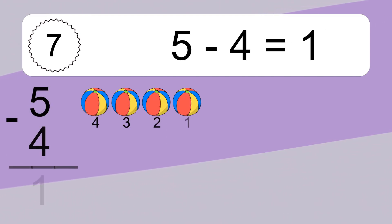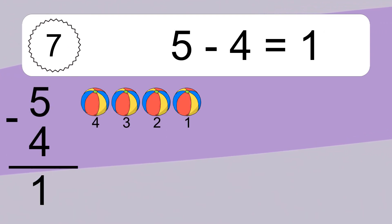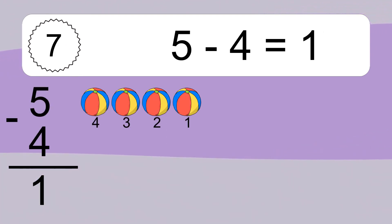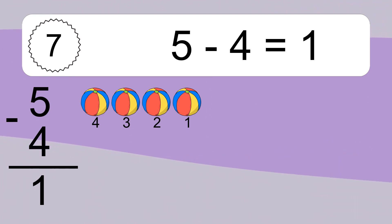Five minus four equals one. Let's count it: four, three, two, one.